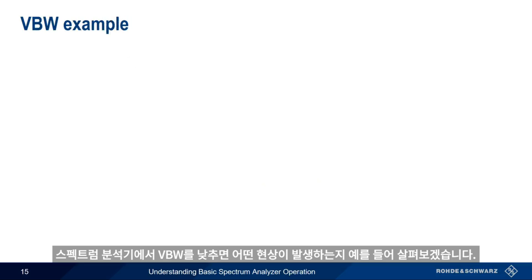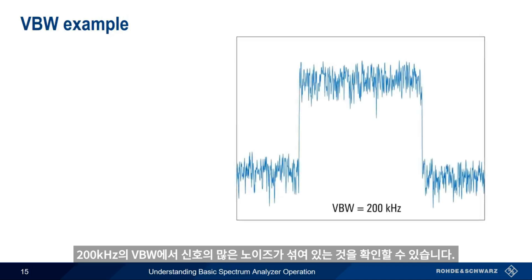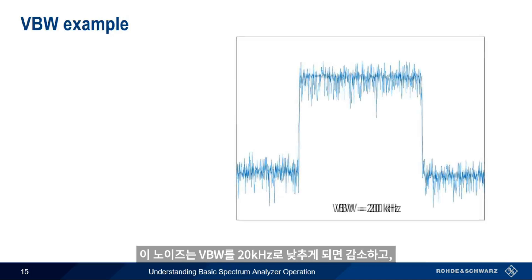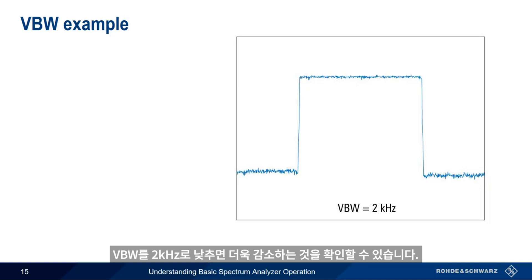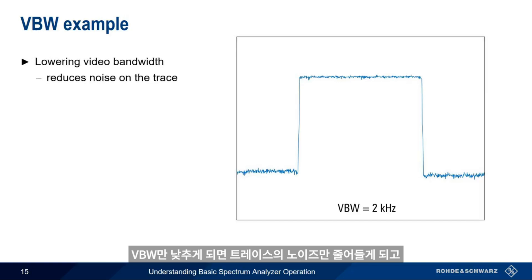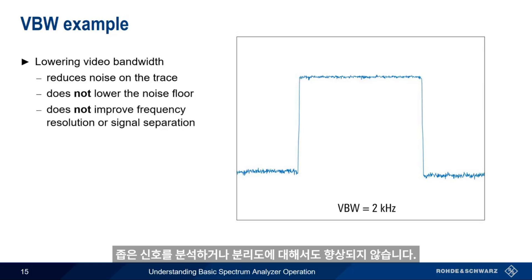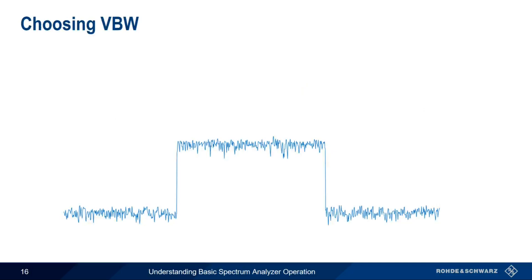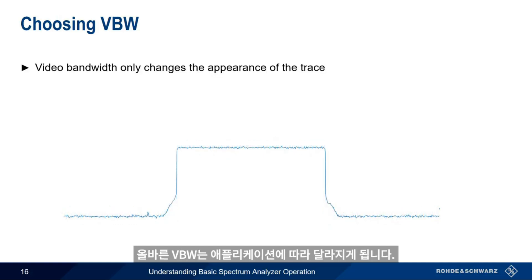Let's take a closer look at what happens as we lower video bandwidth. At a video bandwidth of 200 kHz, we can see a fair amount of noise on our signal. This noise is reduced when we lower video bandwidth to 20 kHz, and decreases even further when video bandwidth is lowered to only 2 kHz. Lowering video bandwidth only reduces the noise on the trace — it doesn't drop the noise floor like resolution bandwidth does, and it also doesn't improve our ability to resolve or separate closely spaced signals.